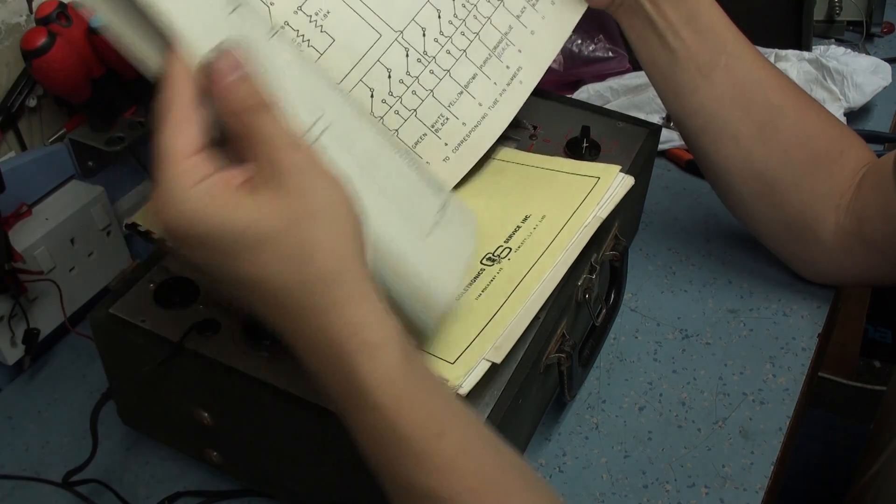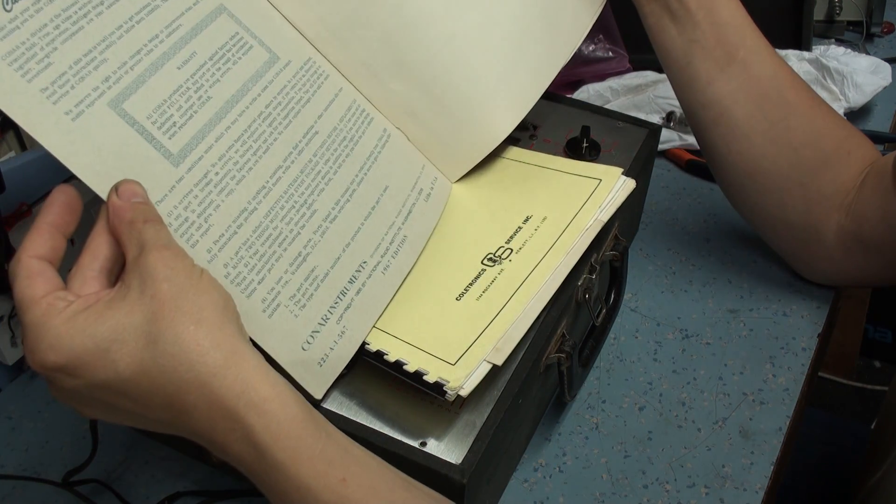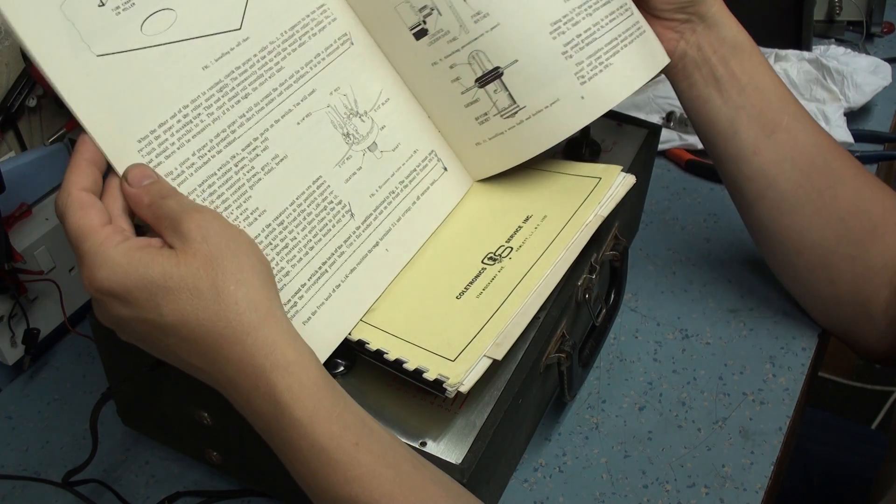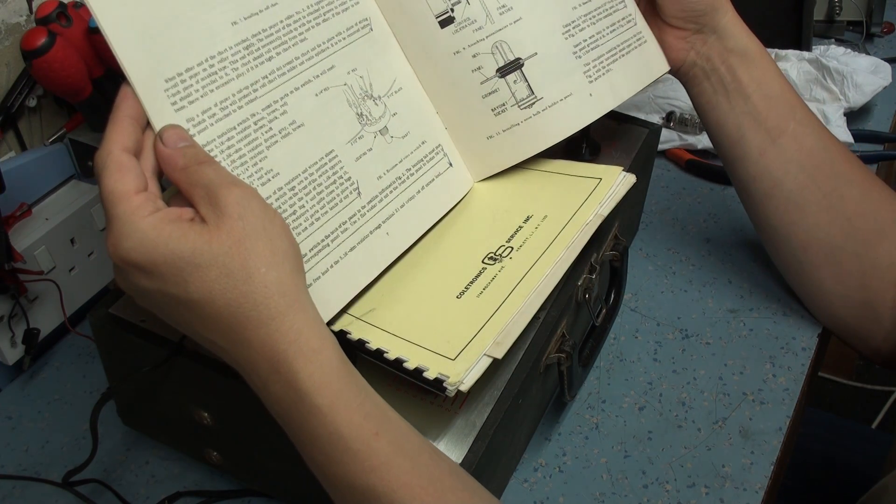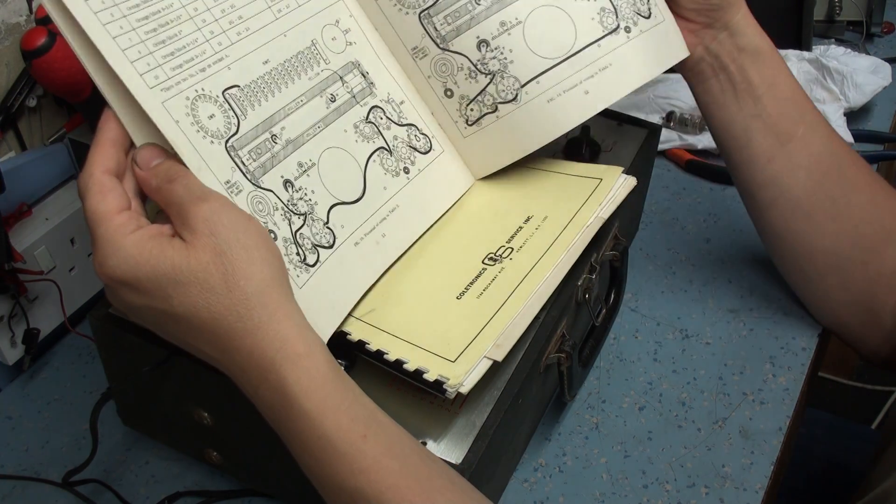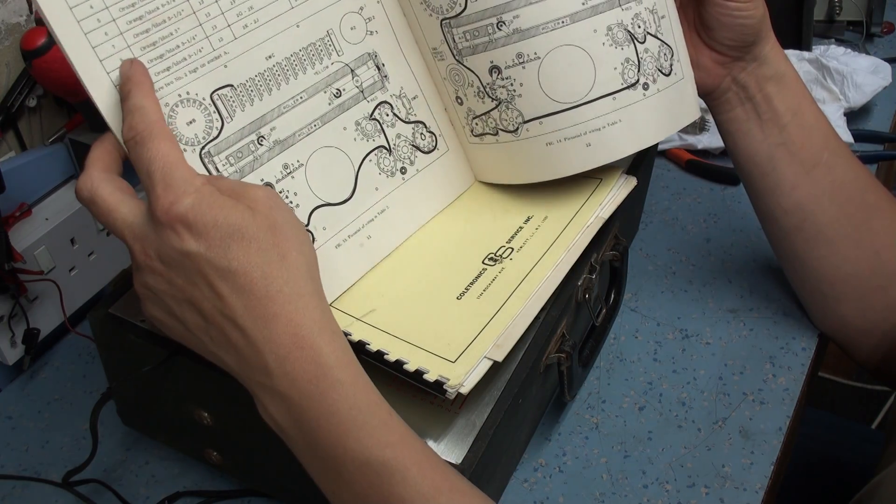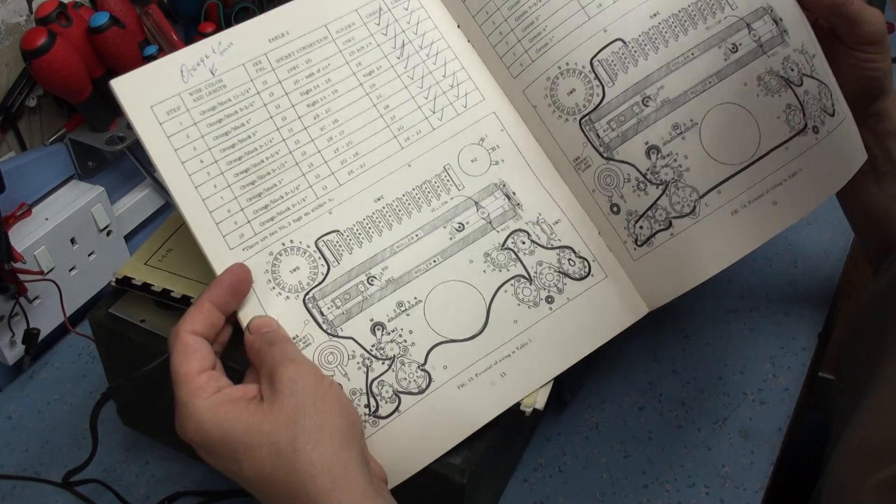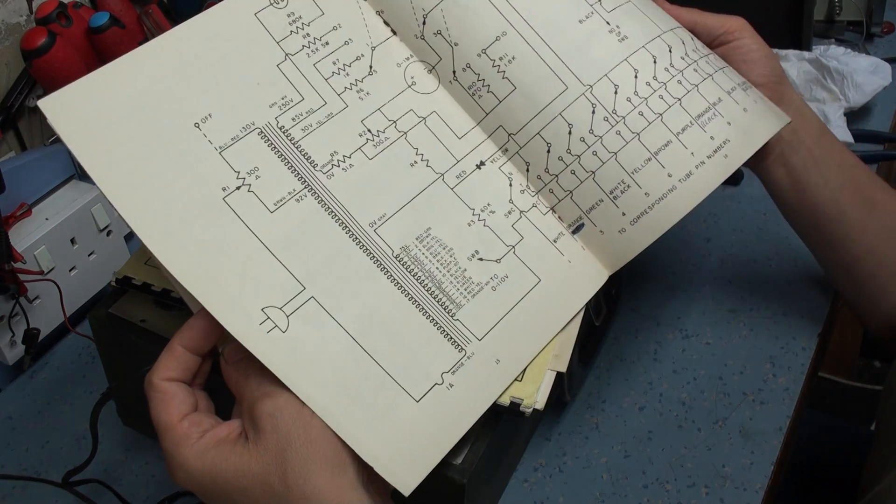It's got the original manual, assembly manual, of how to build it, which is nice. And it shows you points and points of wiring and how to wire it properly. And you can see someone's been through and done a checklist on it to make sure they've done everything correctly.